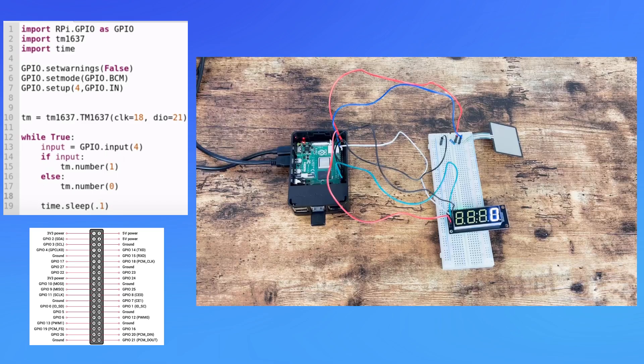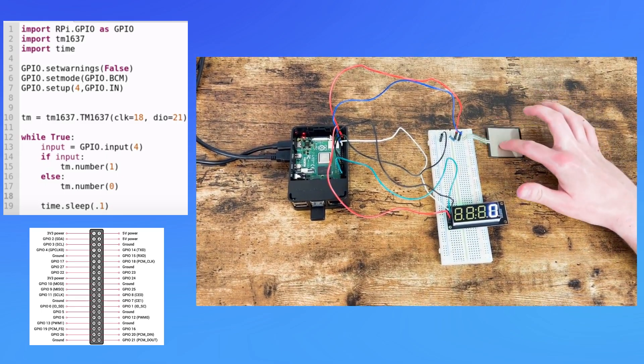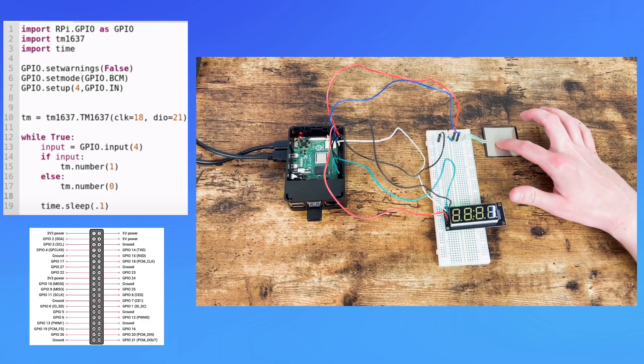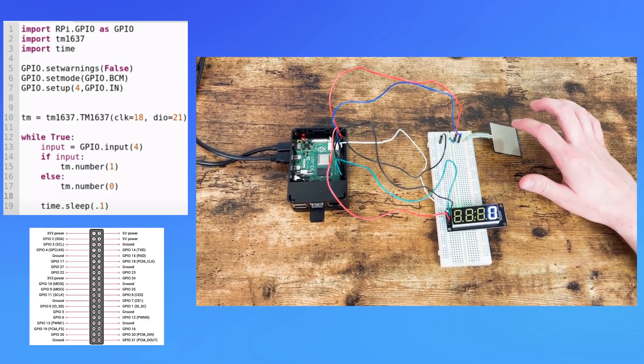We read the input from GPIO4, which will tell us whether or not there is pressure on the resistor. If there is pressure, we print out the number 1 on the panel. If not, we print out 0. We will repeat this check every tenth of a second.